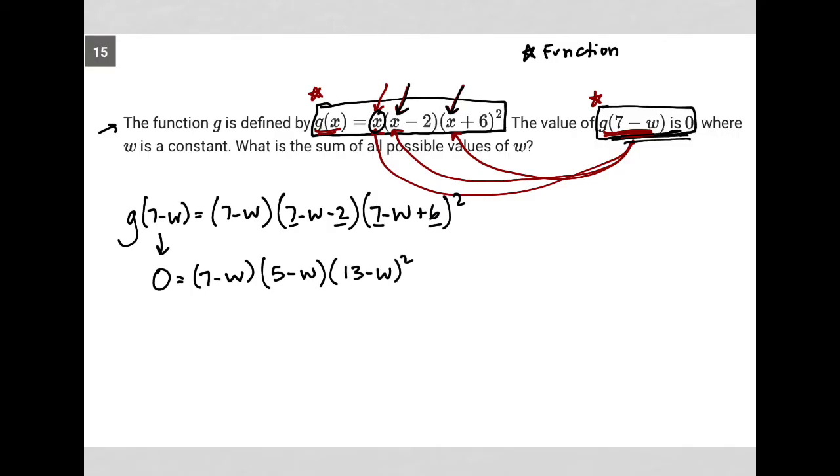Because this equals 0, I can set each individual binomial equal to 0 separately to solve for the possible values of w. If I add w to both sides here, I get 7 equals w.